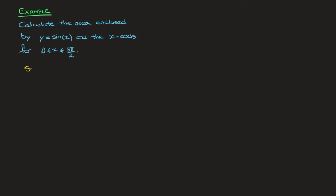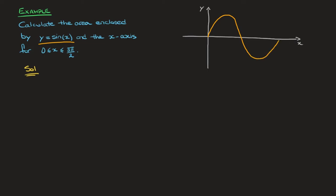The first thing I like to do is draw the graph I'm dealing with, so in this case y equals sine of x, and shade the area I'm trying to calculate. Drawing that curve between 0 and 2 pi: it starts at 0, crosses the x-axis at pi, and meets the x-axis again at 2 pi. It reaches its maximum height of 1 when x equals pi over 2, and its minimum height of negative 1 when x equals 3 pi over 2.